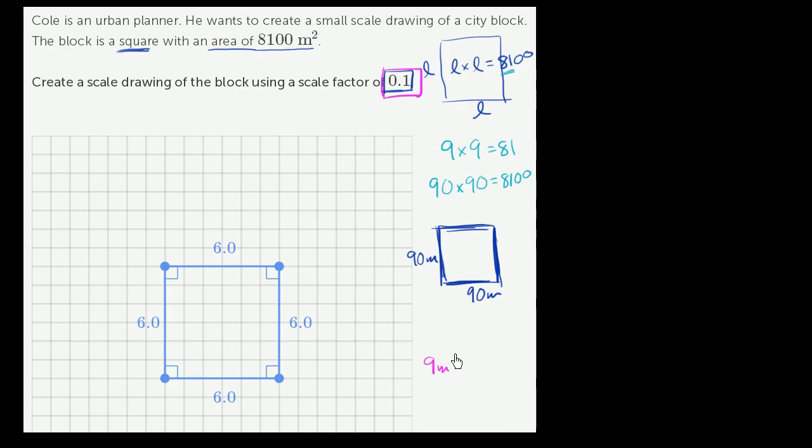When we draw the scale drawing at the scale that Cole intends to draw it at, we would draw 9 meters by 9 meters. So let's go to the actual tool and draw a 9 meter by 9 meter square, or a 9 by 9 square. We can assume that the units here are in terms of meters.